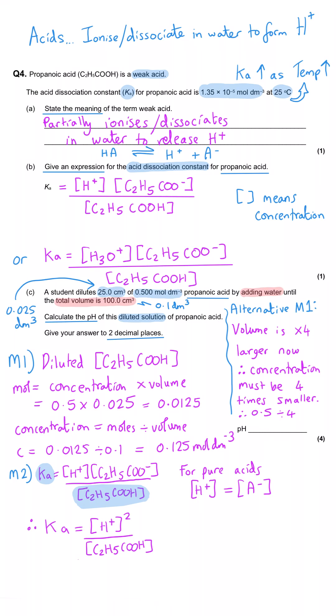So Ka equals H plus squared divided by the propanoic acid concentration. You can plug the numbers in at this point and then rearrange it with the numbers, or you can rearrange it before putting the numbers in. And if we do that, we get H plus is equal to the square root of Ka multiplied by the propanoic acid concentration. When we plug the numbers into that, we get the hydrogen ion concentration as being 1.3 times 10 to the minus 3 moles per decimetre cubed.